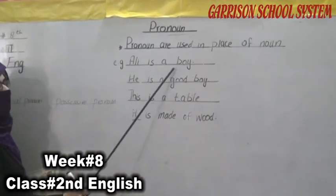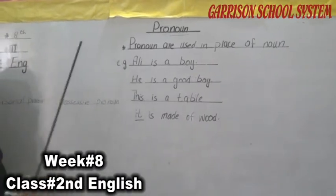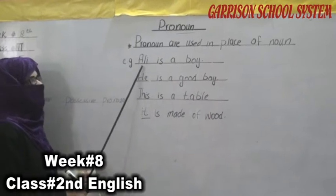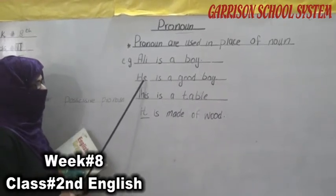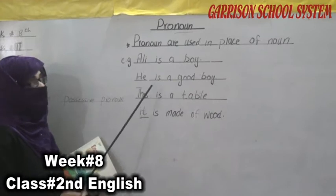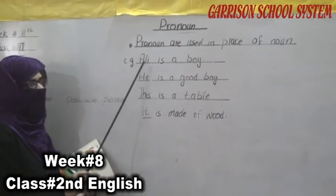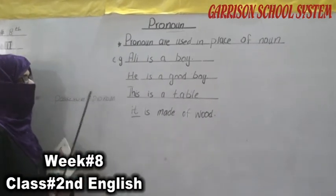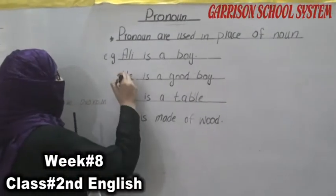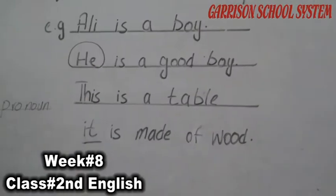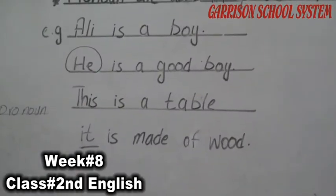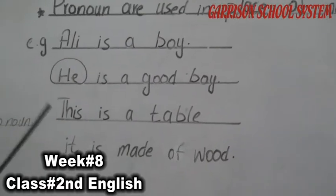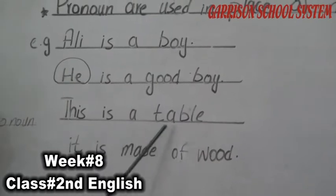For example, 'Ali is a boy.' When we talk about the pronoun, since Ali is a boy, we write 'he', not 'she', because he is a boy. 'He is a good boy.' In this example, 'he' is a complete pronoun — the word used in place of the noun. Then another example: 'This is a table.' In pronoun form, we write 'it'.